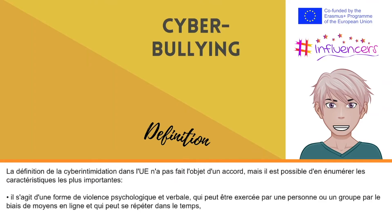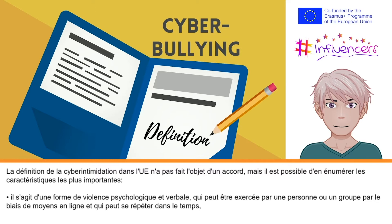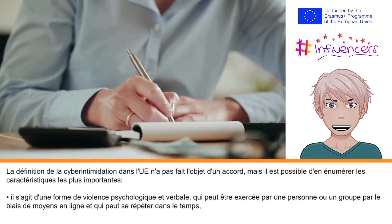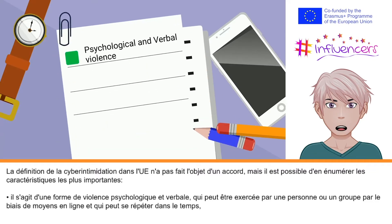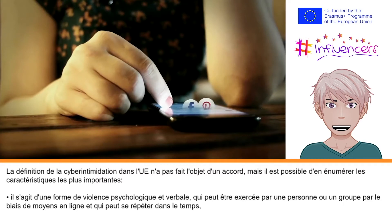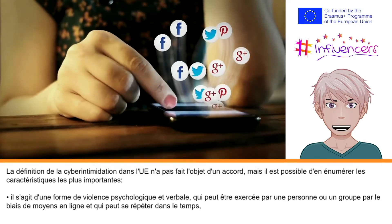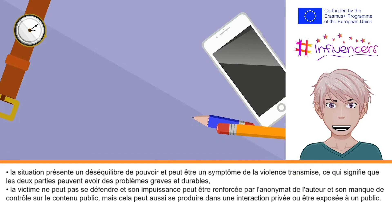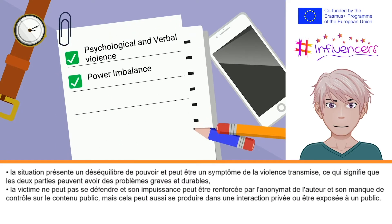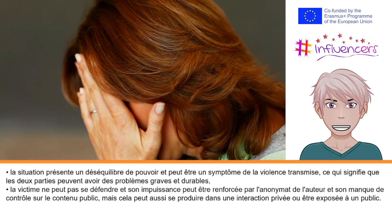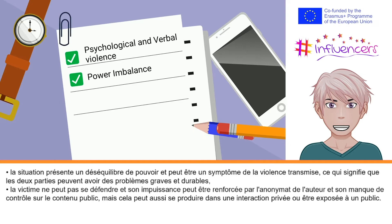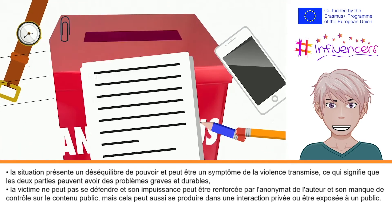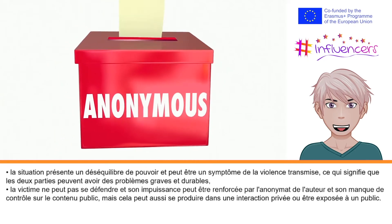The definition of cyberbullying in the EU has not been agreed on. However, it is possible to list the most important characteristics of cyberbullying: it is a form of psychological and verbal violence that can be carried out by one person or a group through online means, and may have the potential to be repeated over time. It exhibits an imbalance of power and may be a symptom of transmitted violence, meaning both sides may have serious lasting problems. The victim cannot defend themselves, and their powerlessness might be enhanced by the perpetrator's anonymity and a lack of control over public content.